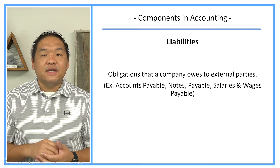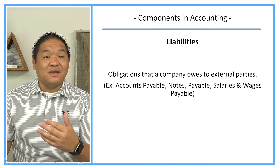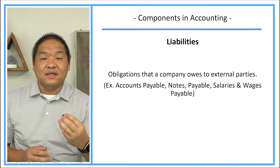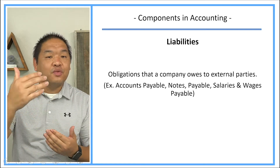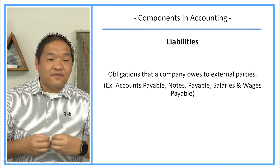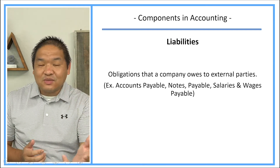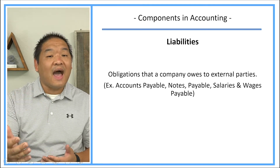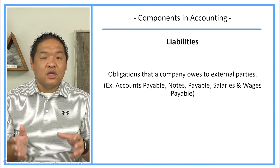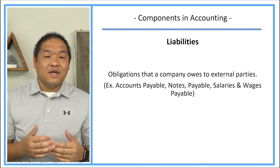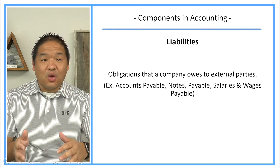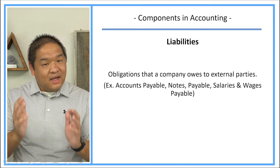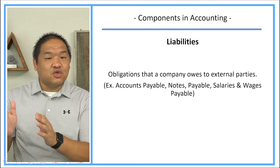It's important not to say liabilities are always about cash, because there are instances where we owe an obligation to someone that might not be cash. An example might be that a customer prepays for a service you're going to provide as a deposit. If you don't provide that service, you have to give the money back — so you have an obligation to do something. In this case, satisfying the obligation is not about paying cash, but providing the service or delivering a product.